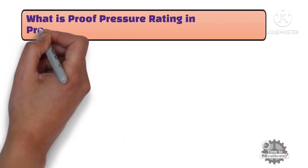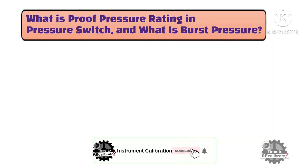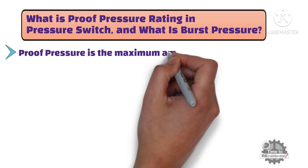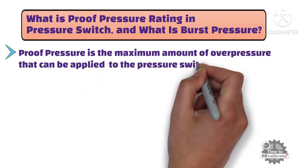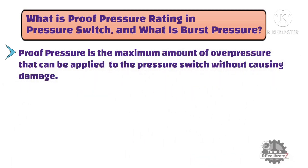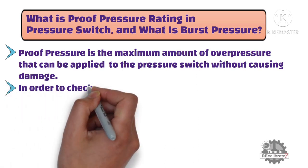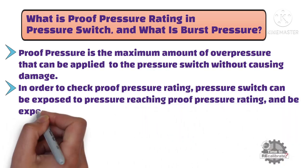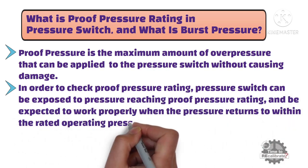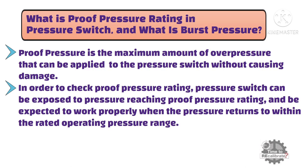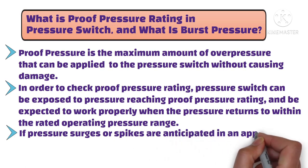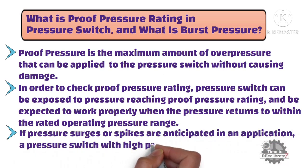Now, what is proof pressure rating in a pressure switch? Proof pressure is the maximum amount of overpressure that can be applied to the pressure switch without causing damage. The pressure switch can be exposed to pressure reaching the proof pressure rating and be expected to work properly when the pressure returns to within the rated operating pressure range. If pressure surges or spikes are anticipated in an application, a pressure switch with a high proof pressure rating should be selected to avoid damage.